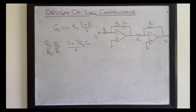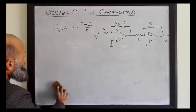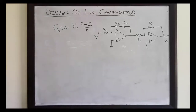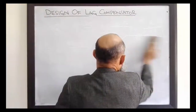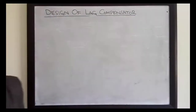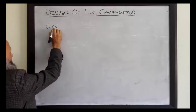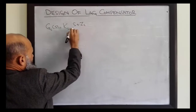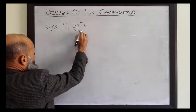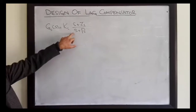The lag compensator that we are going to study in today's lecture does not need active elements, and therefore it is more convenient to implement in some cases. The transfer function of the lag compensator is given by: Gc(s) = Kc(s + Zc) / (s + Pc). That is, it has a zero and a pole.